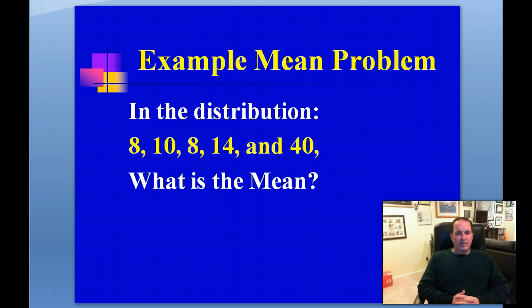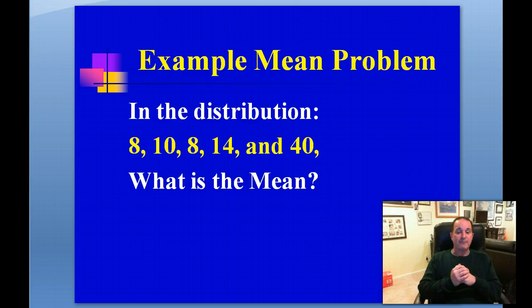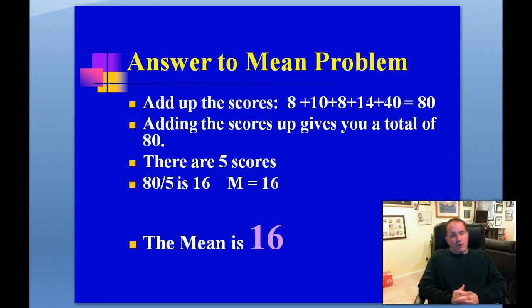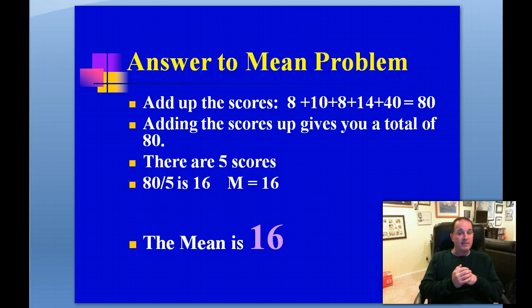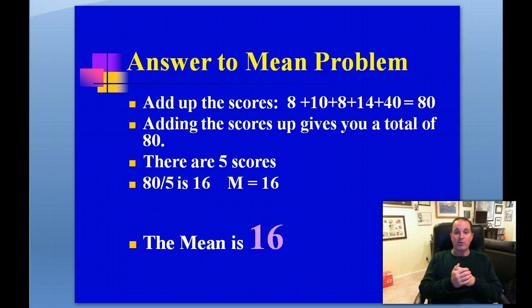Let's take a look at an example problem. Suppose we had a distribution with scores of 8, 10, 8, 14, and 40. Calculate the mean score. Going back to our definition, the first thing we have to do is summate or add up the scores: 8 plus 10 plus 8 plus 14 plus 40. When you add up those scores in the distribution, you get 80.